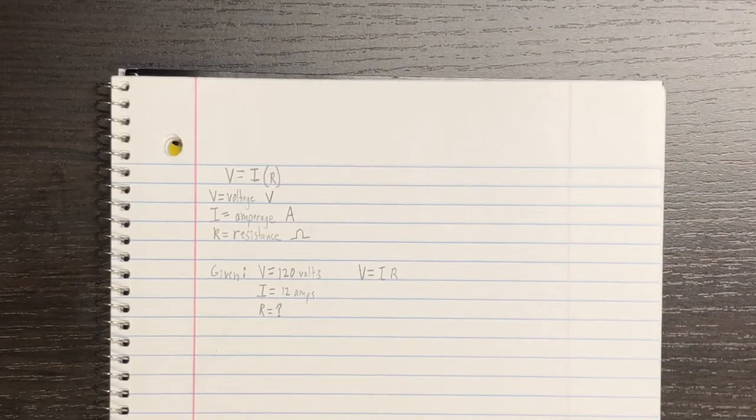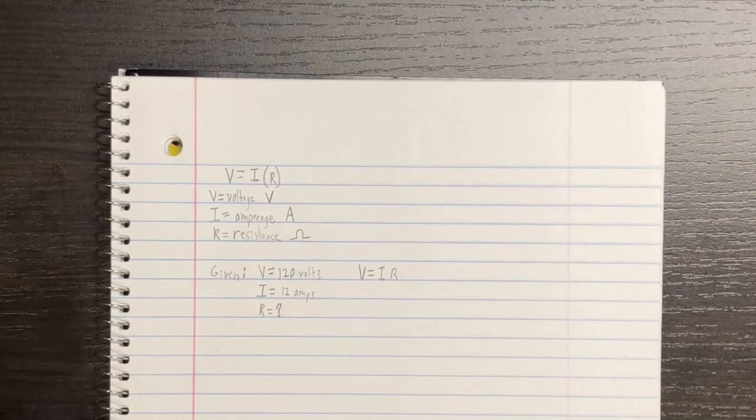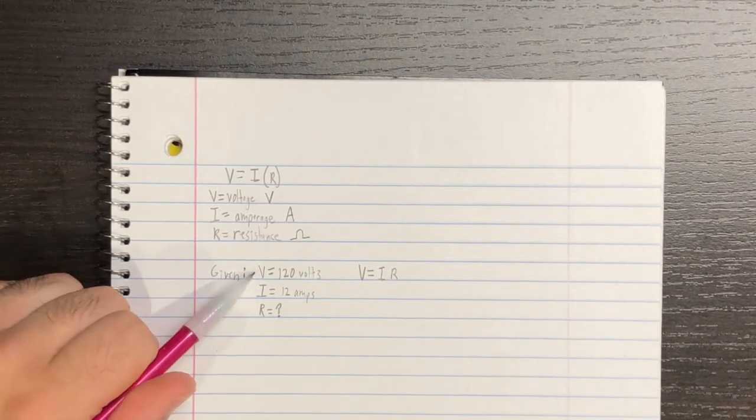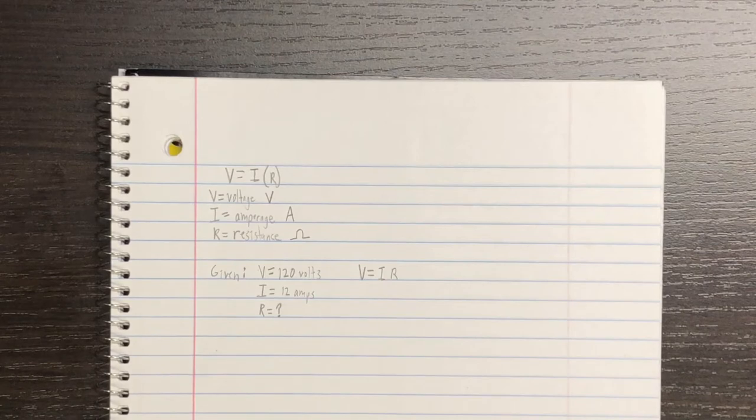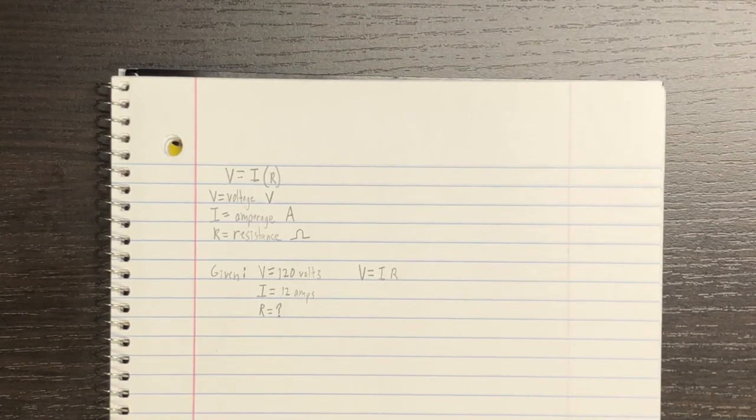Now, let's solve a problem that makes use of Ohm's Law. Let's say a problem states we have a space heater on a 120-volt circuit. That's our first given useful piece of information. So, we wrote it here. And then, let's say that the problem said the space heater had 12 amps of current passing through it. Then, the problem finishes by saying, how much resistance is the space heater putting on the circuit?